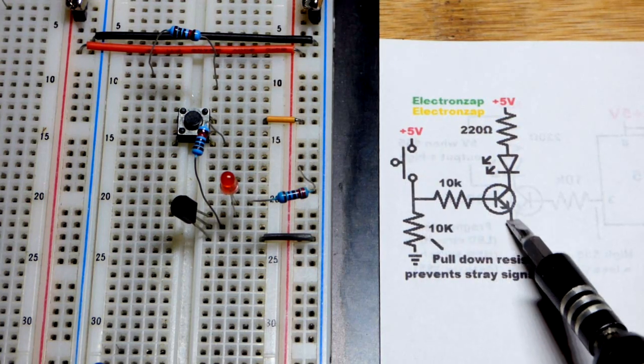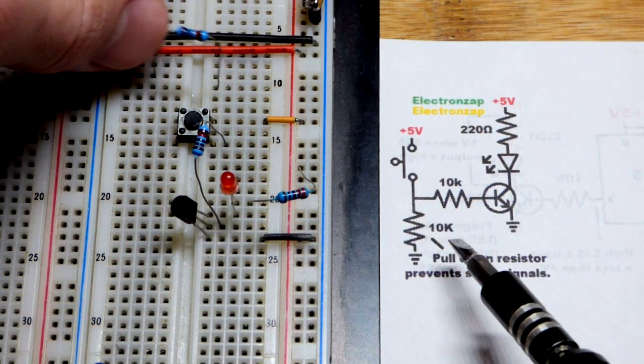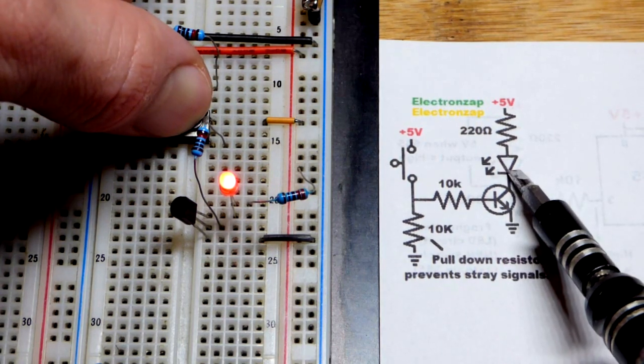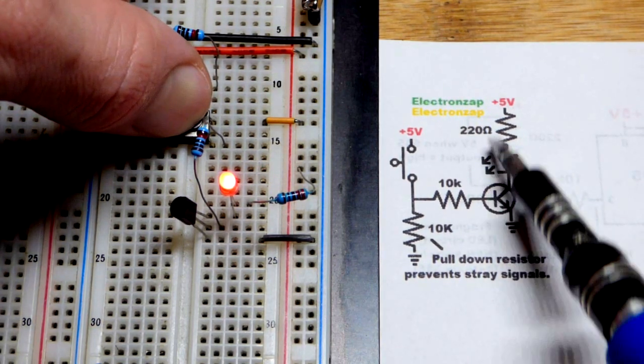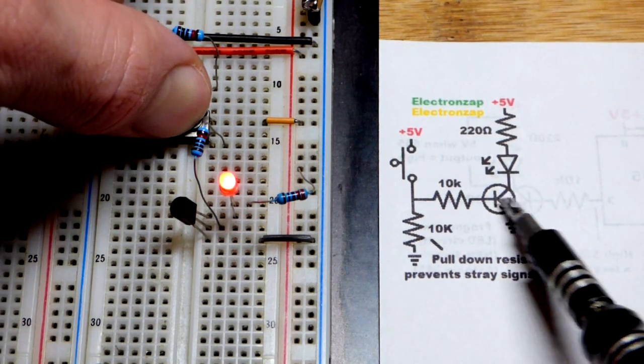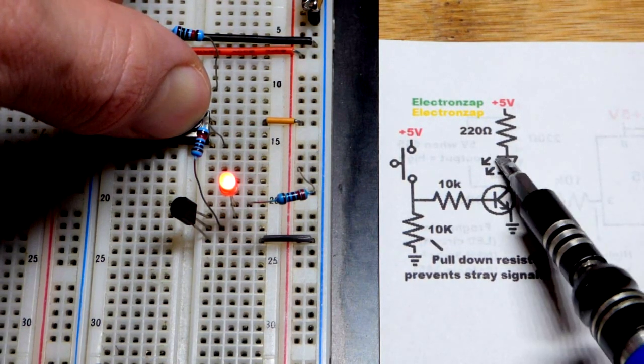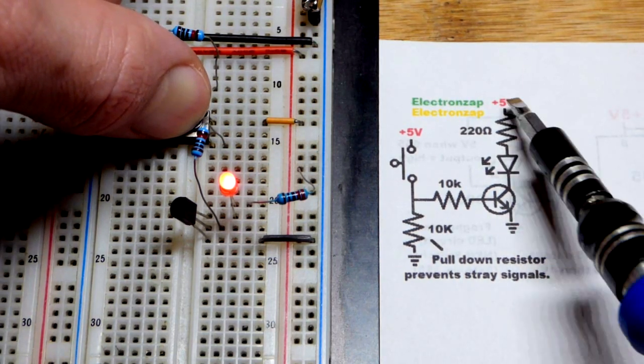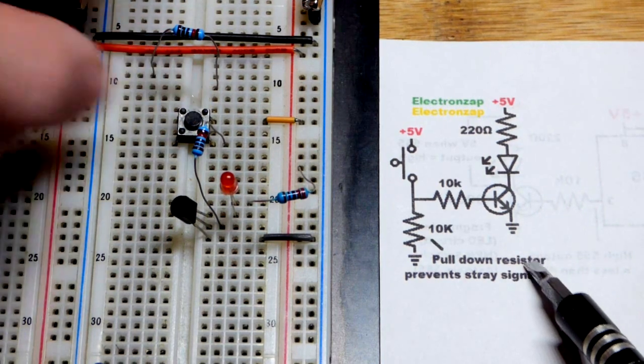Got to close the switch, a little bit of current goes base-to-emitter, and then the collector-to-emitter will conduct fully as far as the LED and 220-ohm resistor will allow current to flow. So the transistor is conducting better than they are, so ultimately they are limiting the current. They're going to set how much current actually flows through it.